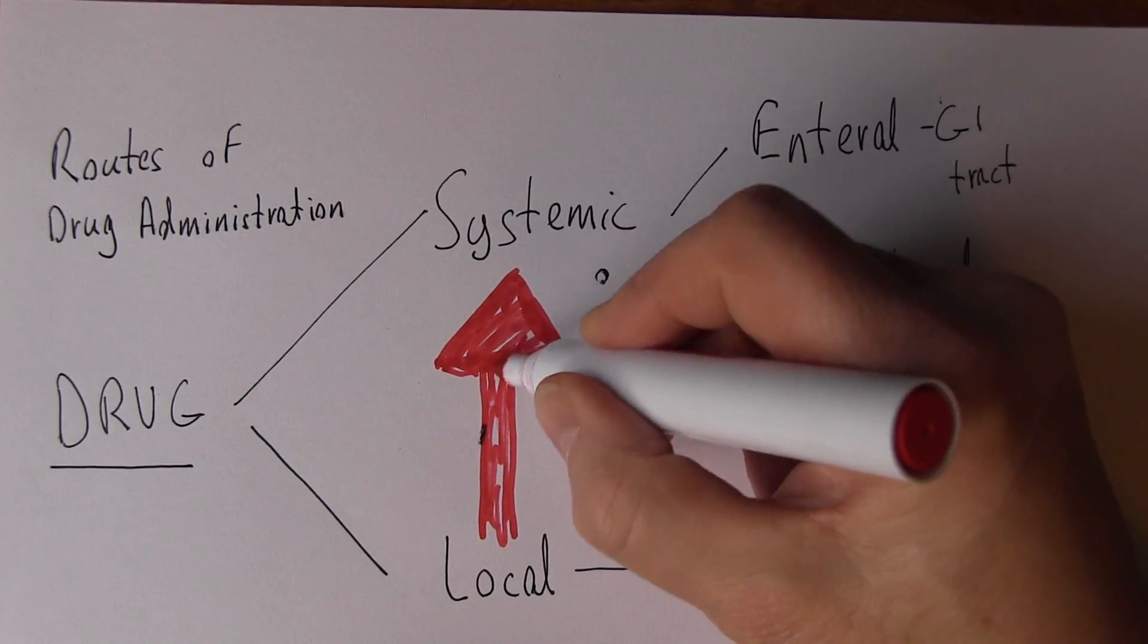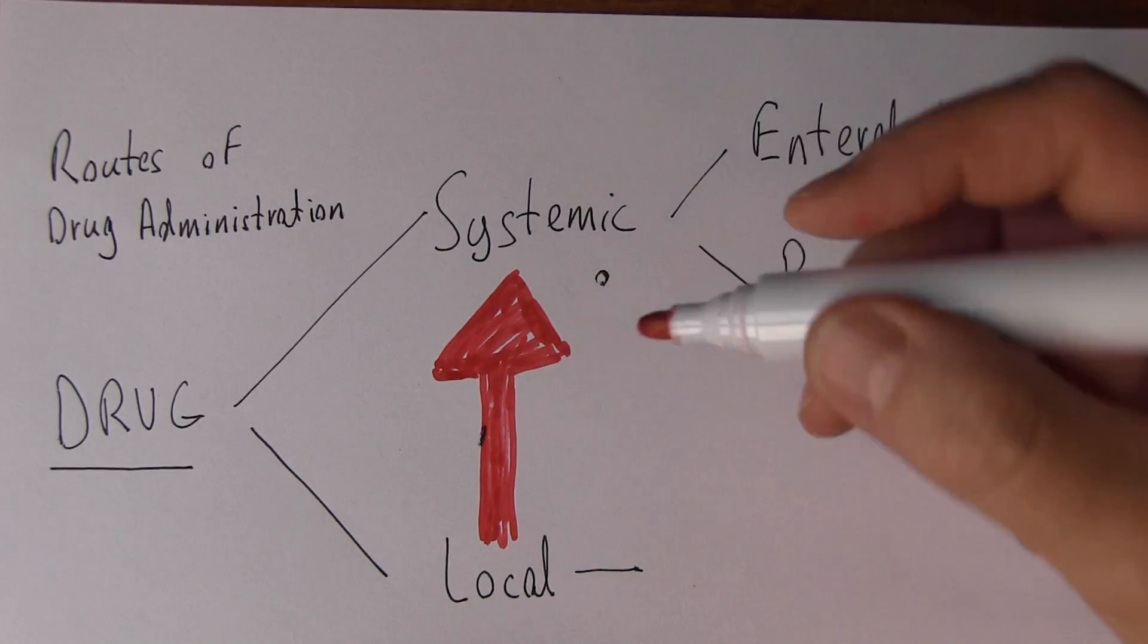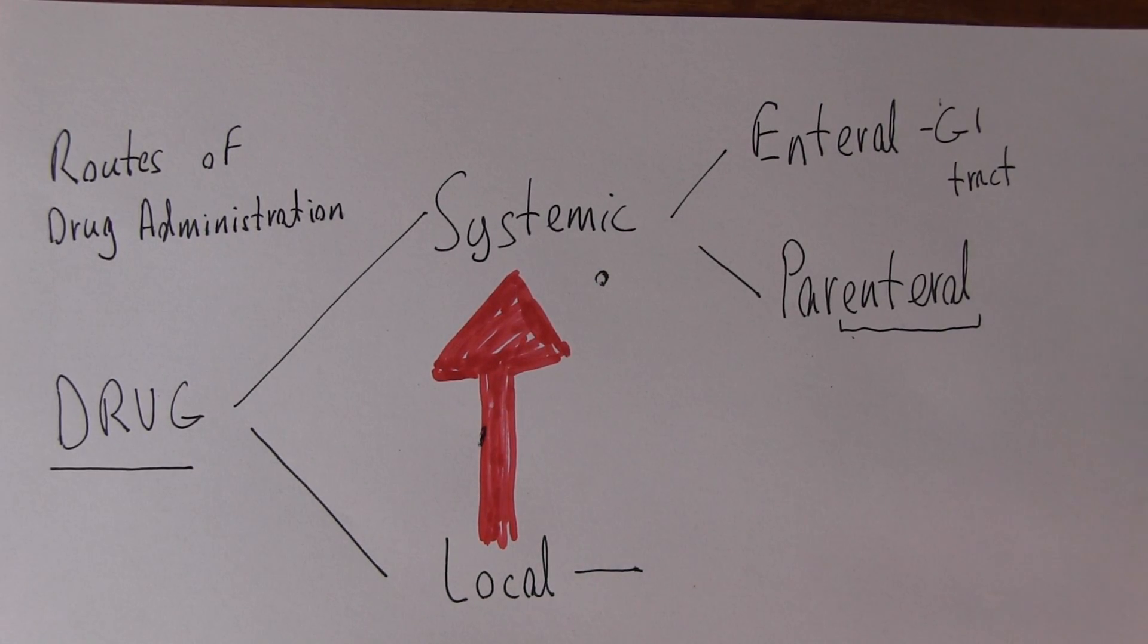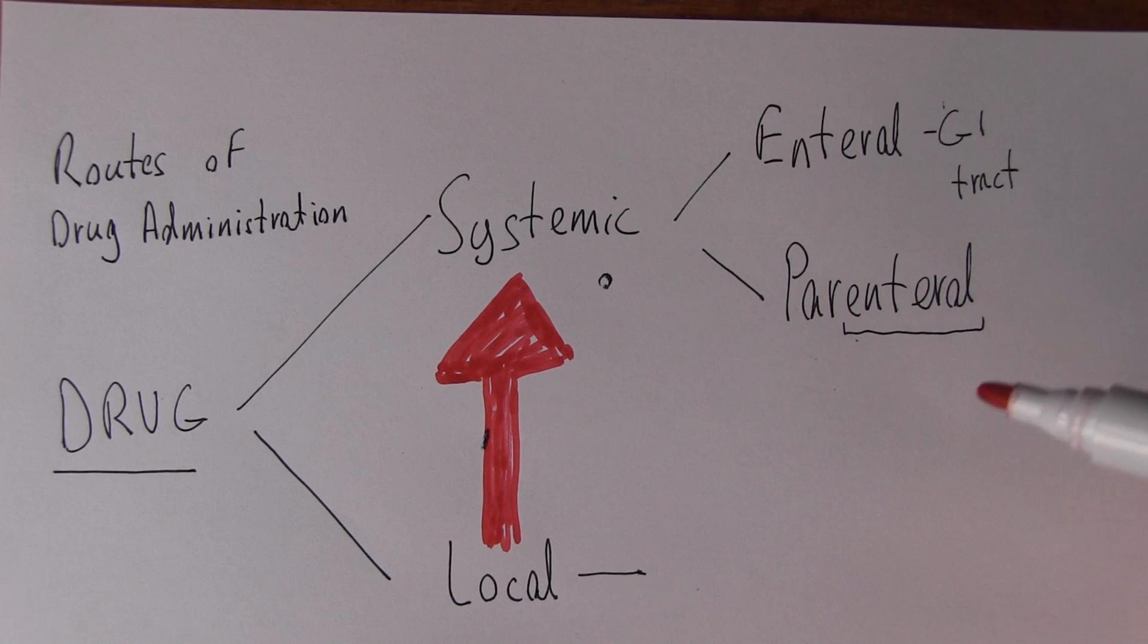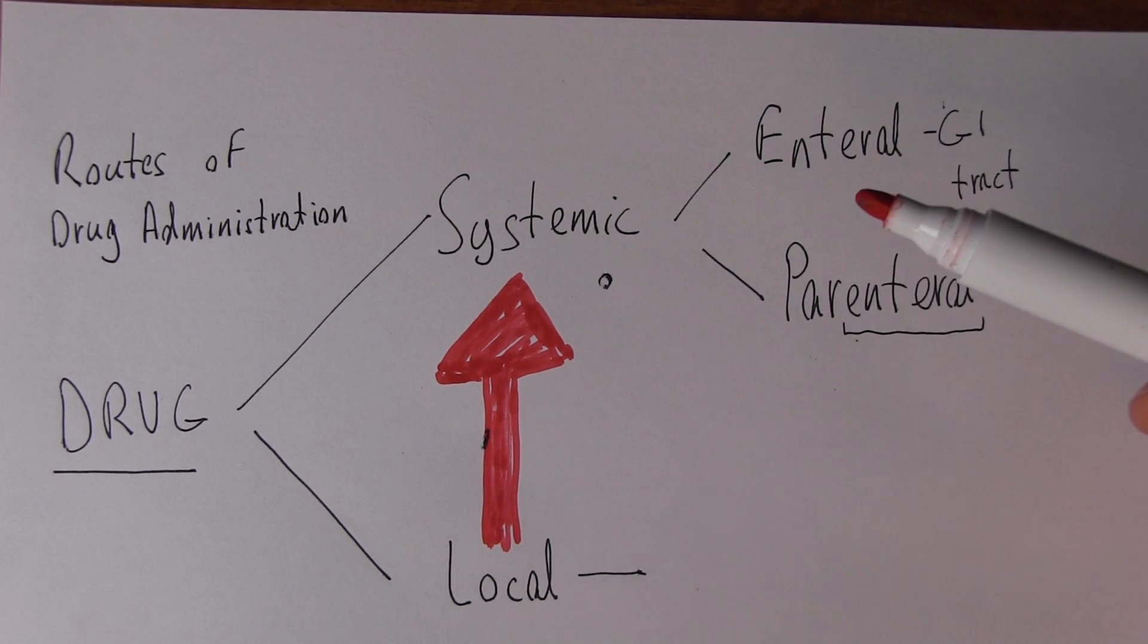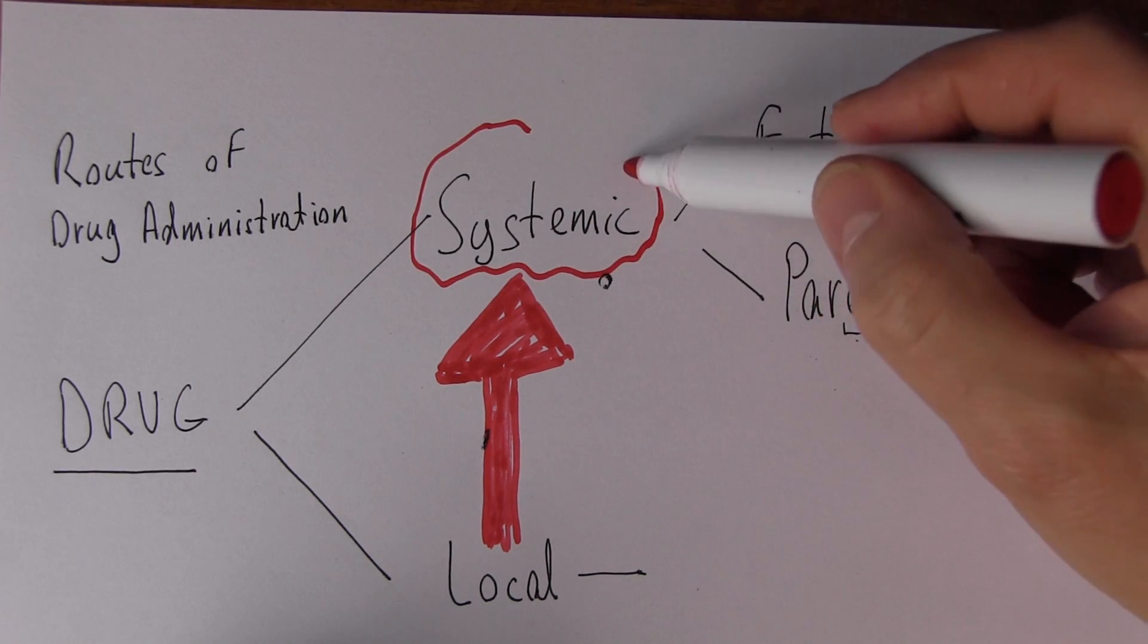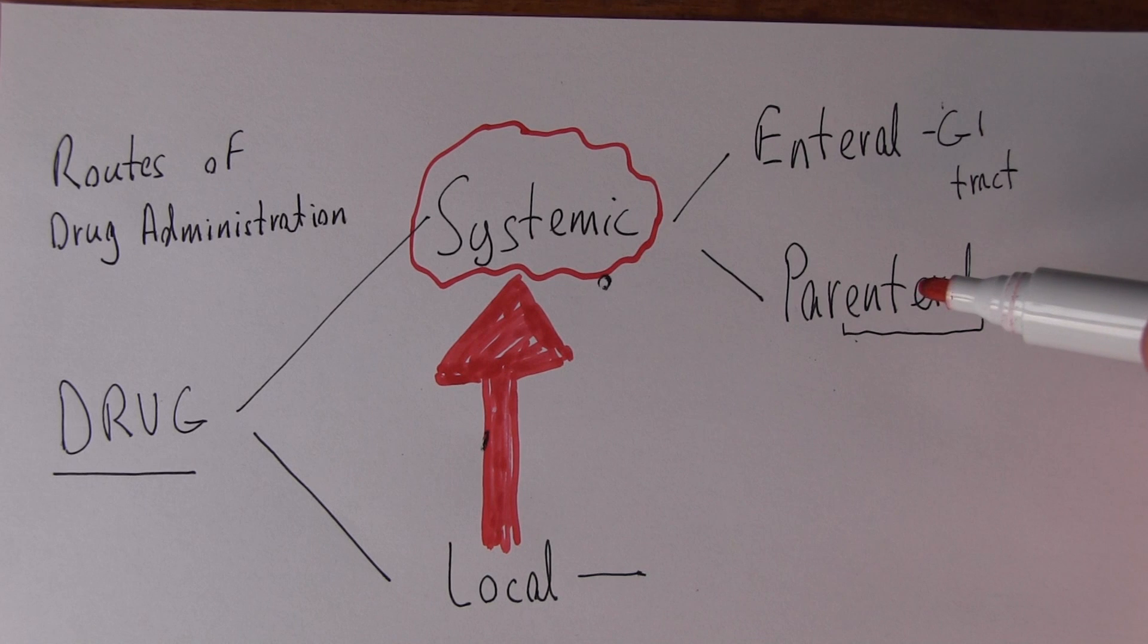So don't give too much local lignocaine, because that will be absorbed and it will have adverse effects on the myocardium, for example. So always bear in mind the possibility that local drug administration can give rise to some systemic absorption and therefore systemic effects.